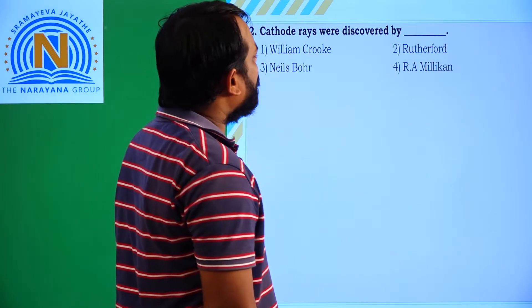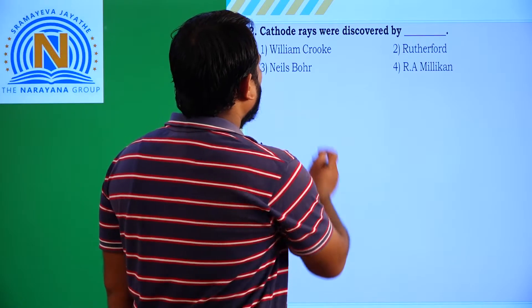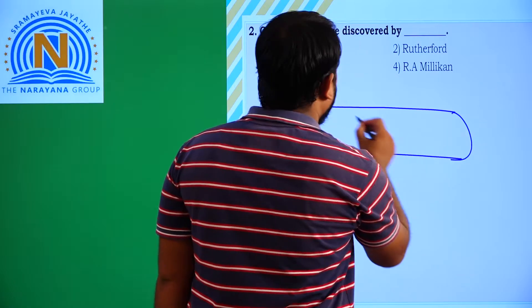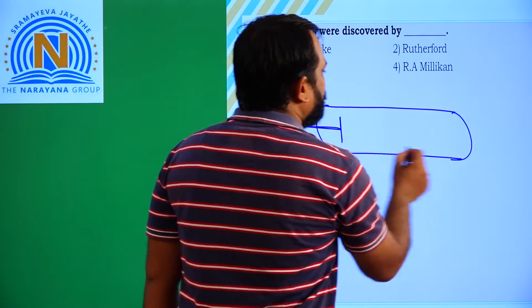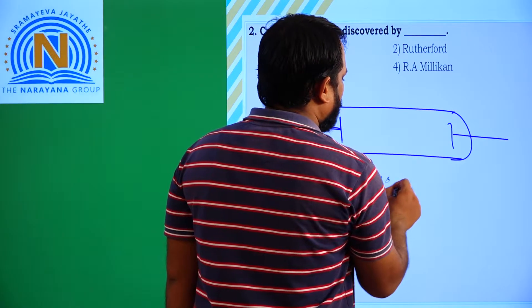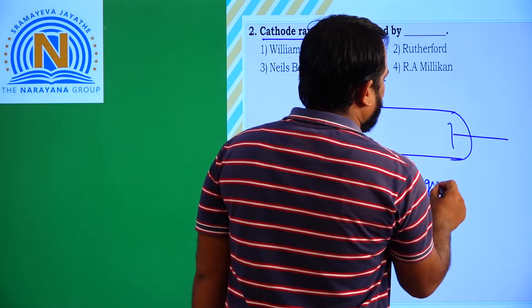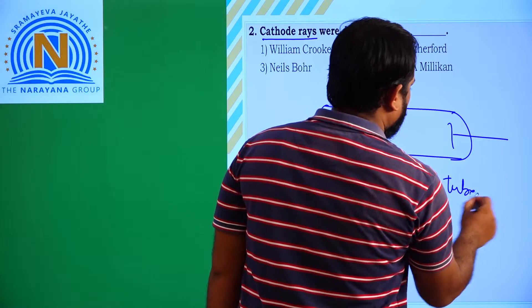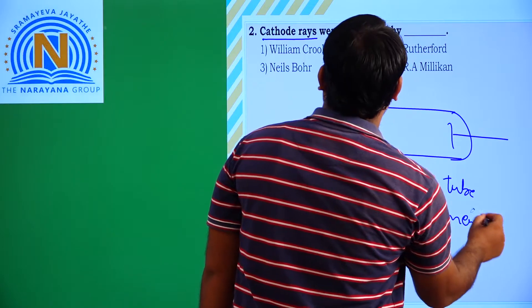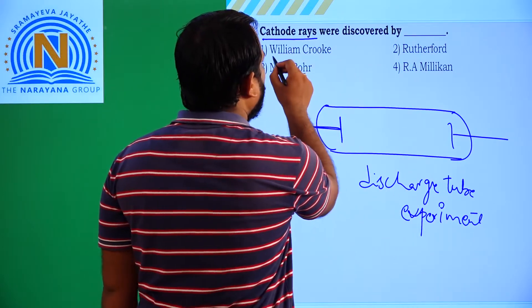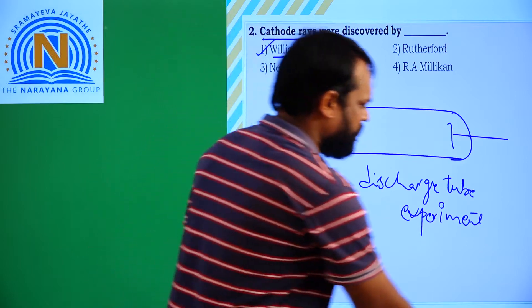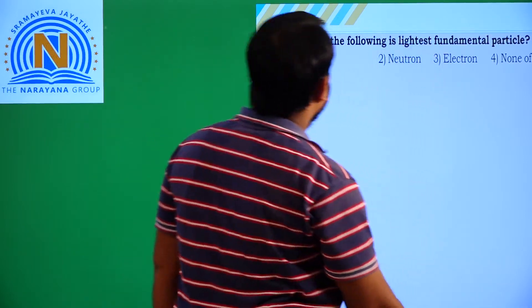Cathode rays were discovered by - we all know cathode rays are discovered by William Crookes and his discharge tube experiment. Who is the scientist? William Crookes. Which option? First option. Next, we will move to next question.